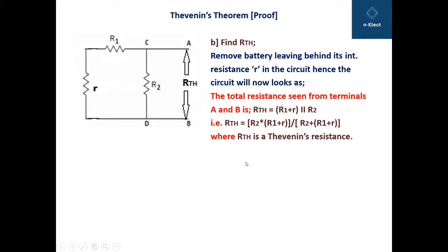For two resistances in parallel, the formula is R1 times R2 divided by R1 plus R2. Here we treat the entire R1 plus r as one resistance and R2 as the second. So RTH equals R2 multiplied by R1 plus r, all divided by R2 plus R1 plus r. This RTH is the Thevenin's resistance.